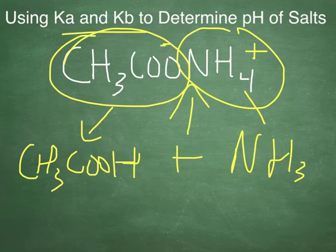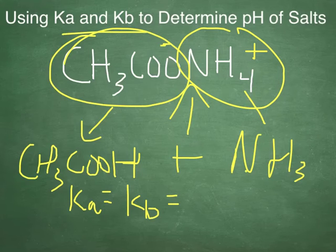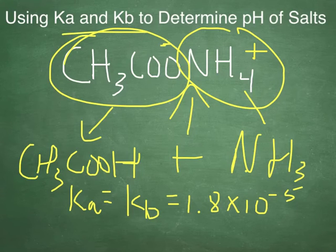Okay, now that we've looked them up, I think what you've noticed is that the Ka for this is equal to the Kb for this, which is equal to 1.8 times 10 to the negative 5. They're both the same. So guess what? Because the Ka and the Kb are equal, the pH of this salt is going to be equal to 7. Okay, but in general, in general, if the Ka is greater than the Kb, the pH is going to be acidic or less than 7. If the Kb is greater than the Ka, then the pH of the salt is going to be basic or greater than 7.